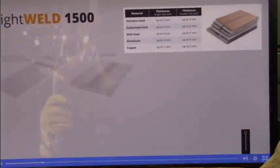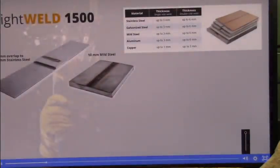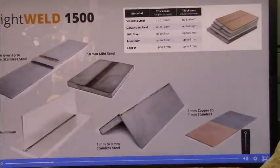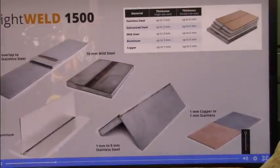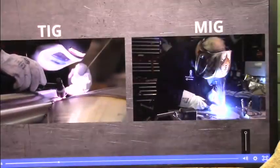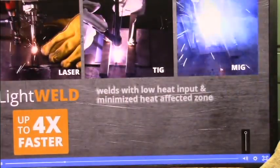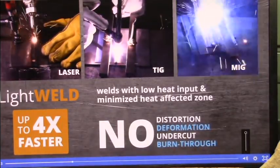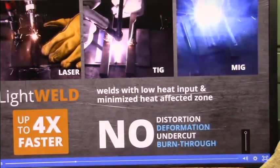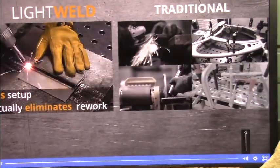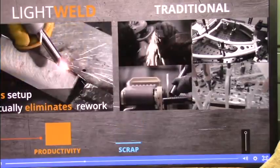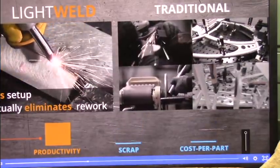Light weld 1500 handles thick, thin, and reflective metals, different thickness combinations, and even welds dissimilar metals of different electrical conductivity. Compared with traditional methods, light weld is up to four times faster, welds with low heat input, and minimized heat affected zone without distortion, deformation, undercut, or burn-through. Parts require less setup and virtually no rework, increasing productivity, reducing scrap, and lowering cost per part.